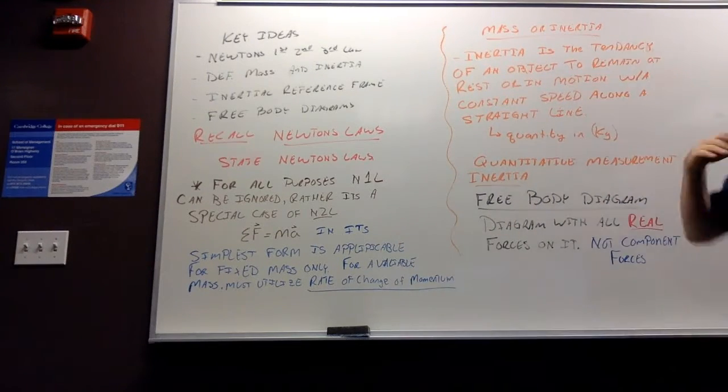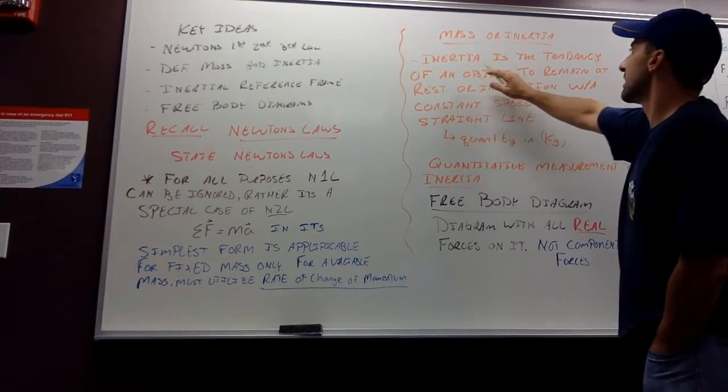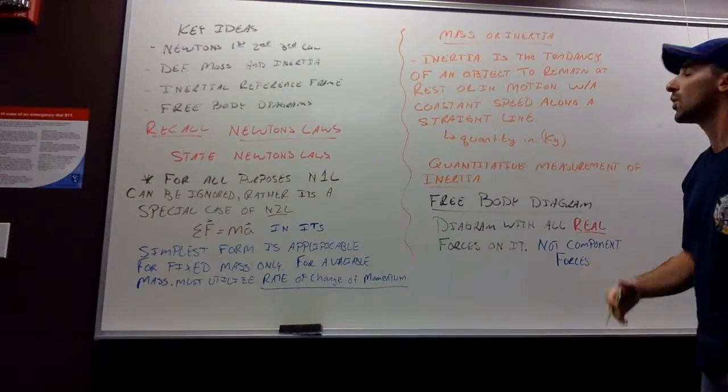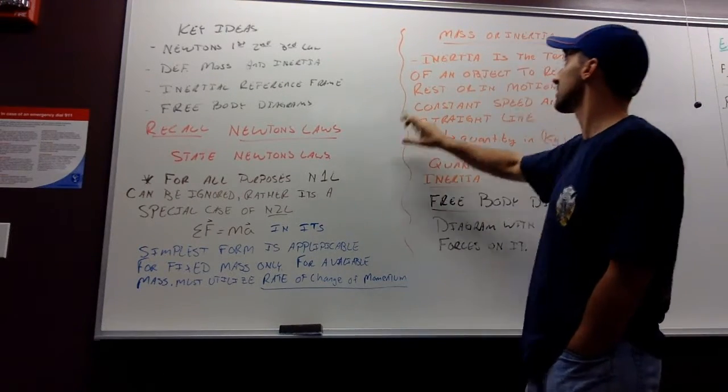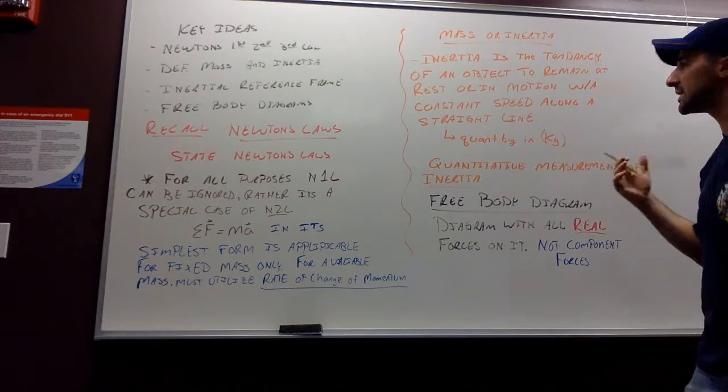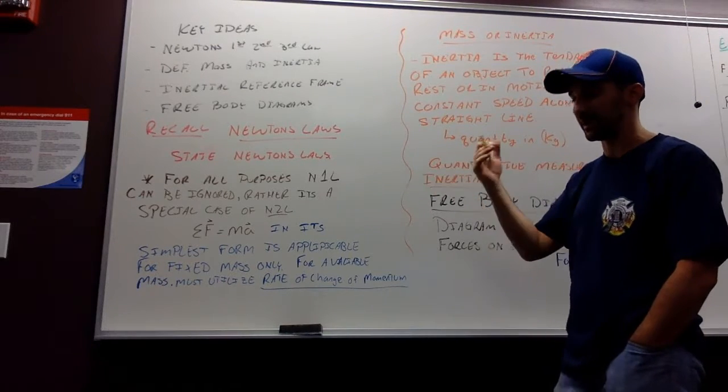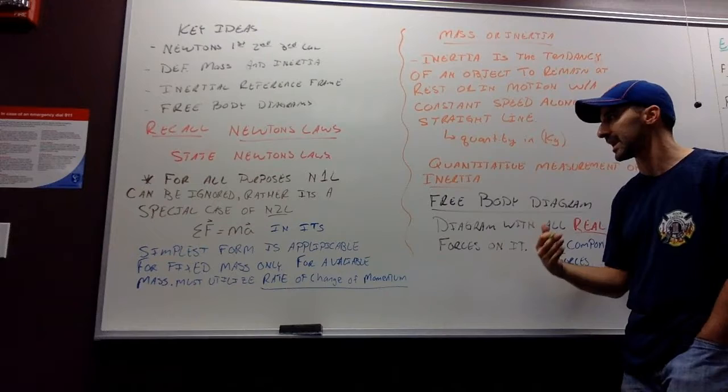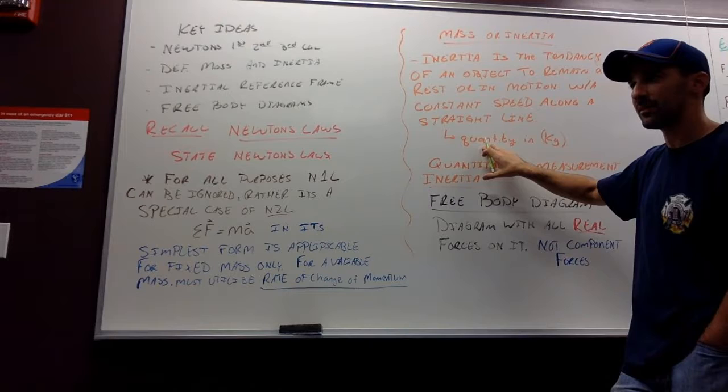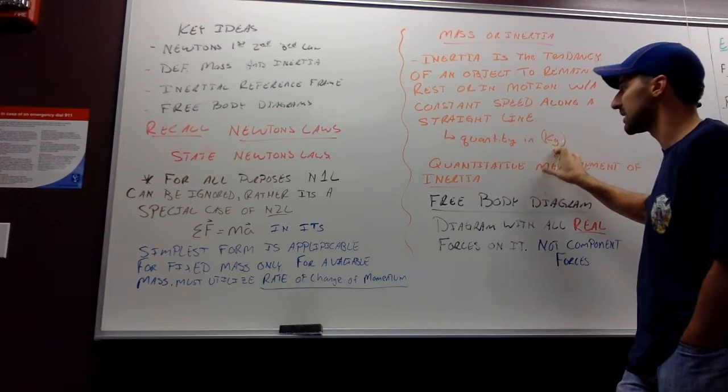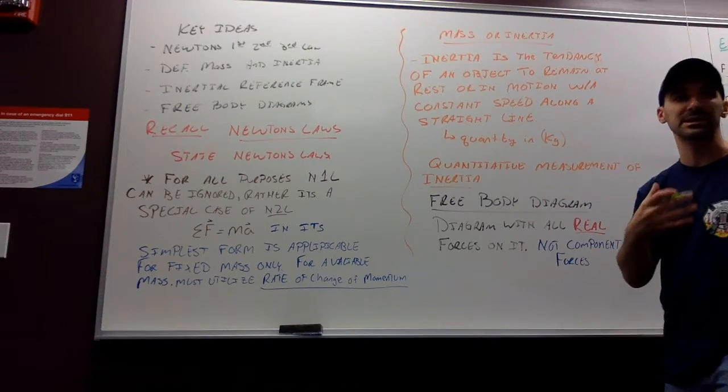Moving on to what mass or inertia is, you may remember that inertia is an object's ability or tendency to remain at rest or in motion. Newton's first law is often referred to as the law of inertia. Inertia is basically an object doing what it's doing. And if an object is moving in a straight line, it's going to continue to move in a straight line. It's going to stay at rest unless something acts on it. We know this to be a quantitative variable that we measure in kilograms, otherwise known as mass. So mass and inertia are basically the same thing. One of them explains the other.